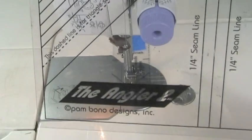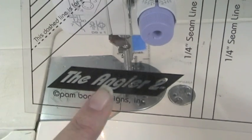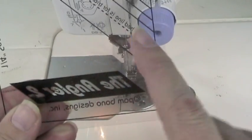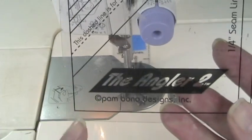So when you bring the Angler in, make sure that you can read the writing. If you have it backwards, it's a no. Make sure you can read the writing.